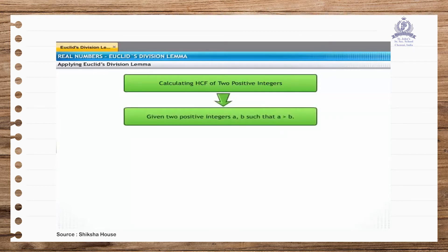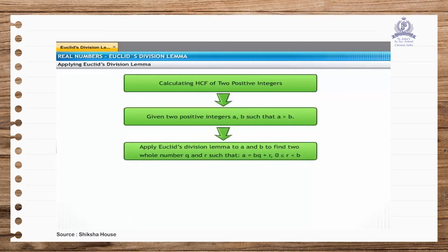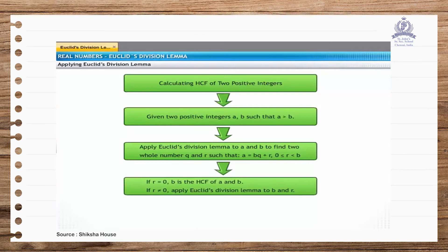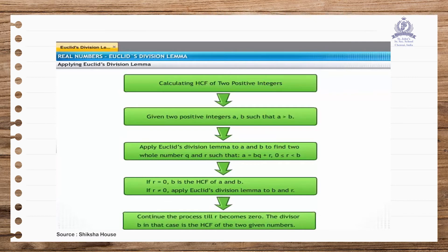Suppose we have two positive integers A and B such that A is greater than B. Apply Euclid's division lemma to find two whole numbers Q and R such that A = BQ + R. Check the value of R: if R equals 0, then B is the HCF of the given numbers. If R is not equal to 0, apply Euclid's division lemma to the new divisor B and the remainder R. Continue this process until the remainder R becomes 0. The value of divisor B at that point is the HCF.